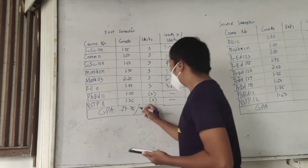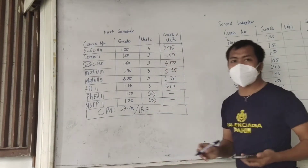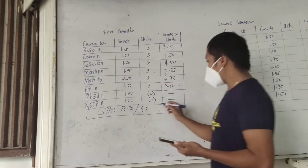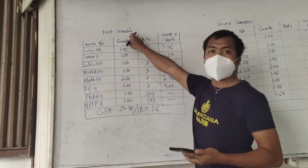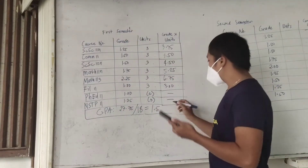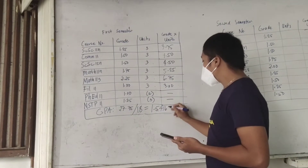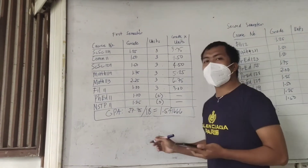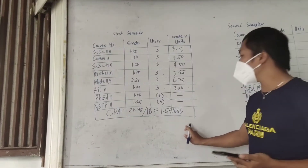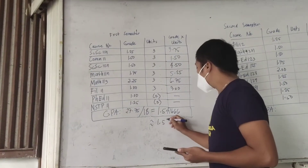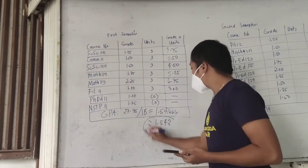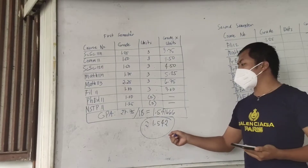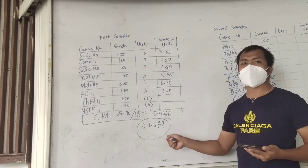There are 6 subjects, each with 3 units, so that's 18 units total. So 27.75 divided by 18 gives your GPA for this semester — that's 1.54541666. In our university, we use three decimal places, so approximately this is 1.542. That would be your GPA for the first semester.